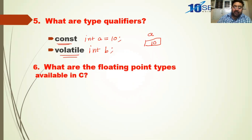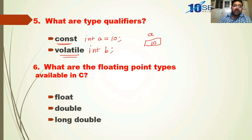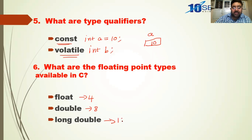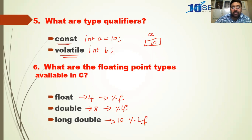What are the floating point types available in C? Float, double, and long double. A floating point number means a number with a decimal point. Float occupies 4 bytes, double occupies 8 bytes, and long double occupies 10 bytes — not 16, as many students mistakenly say. Float is represented by %f, double by %lf, and long double by %Lf. The format specifier is also very important.